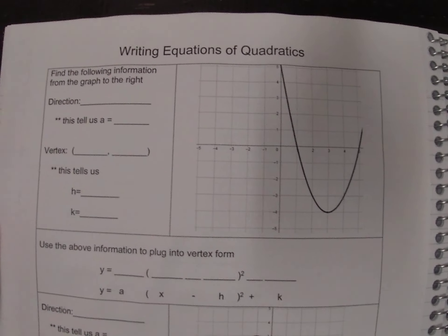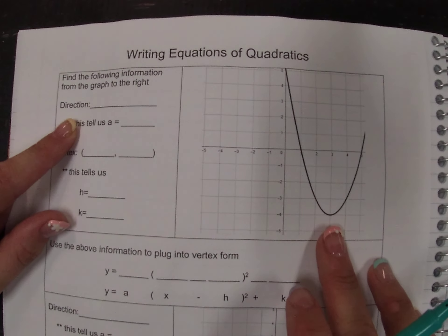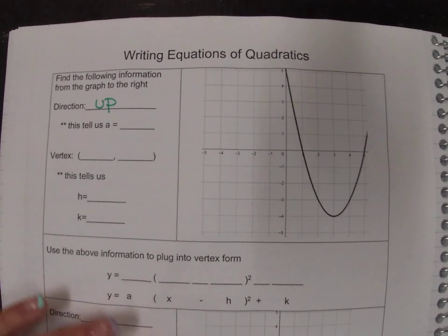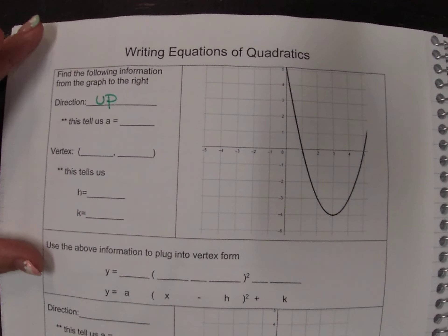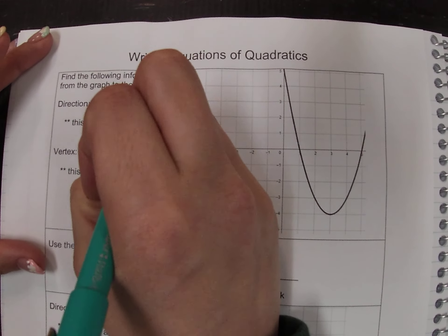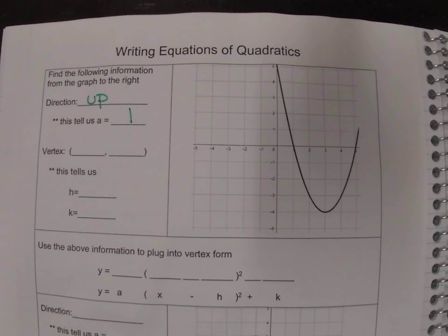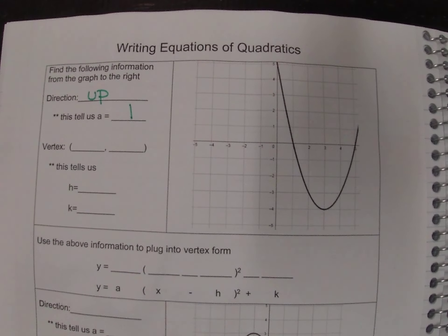Things that we need to consider are: what direction does this parabola open? This parabola opens up, and we know if a parabola opens up, then we know that this has an a value of positive one. The other piece of important information is how much this parabola has been shifted from the origin — how far it's gone right and left and up and down.